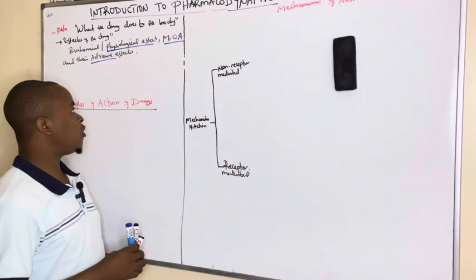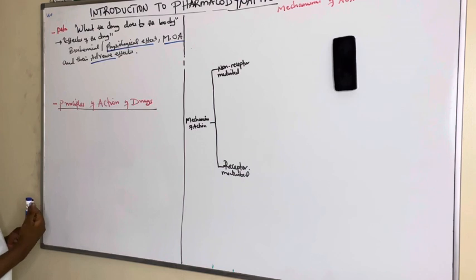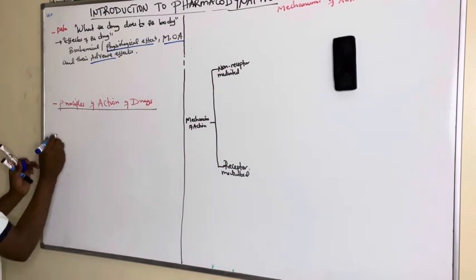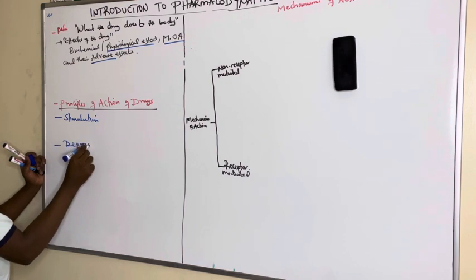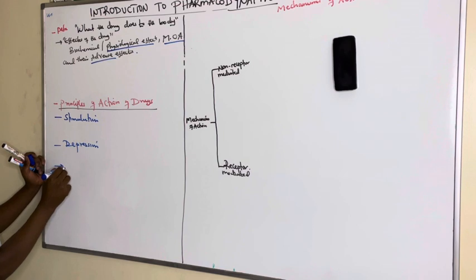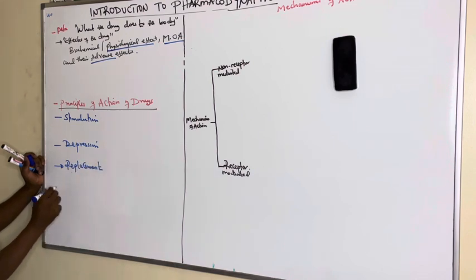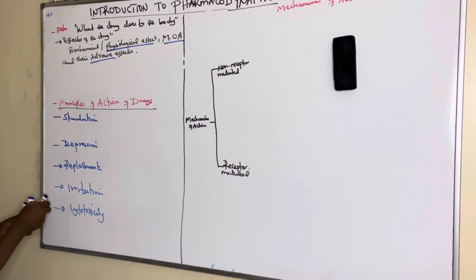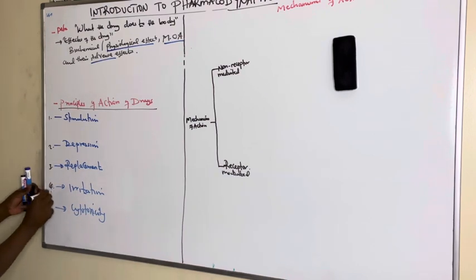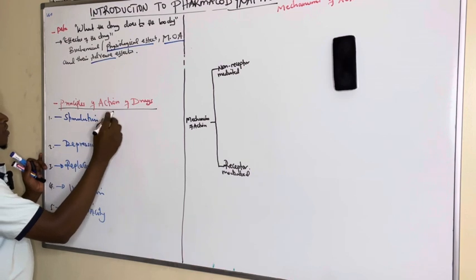After looking at the definition, we're going to see different principles under which drugs act — what we call the types of action. Some drugs act by stimulation, others act by depletion, others act by replacement or substitution, others act by irritation, and lastly by cytotoxicity. These are the five ways drugs act in the body.